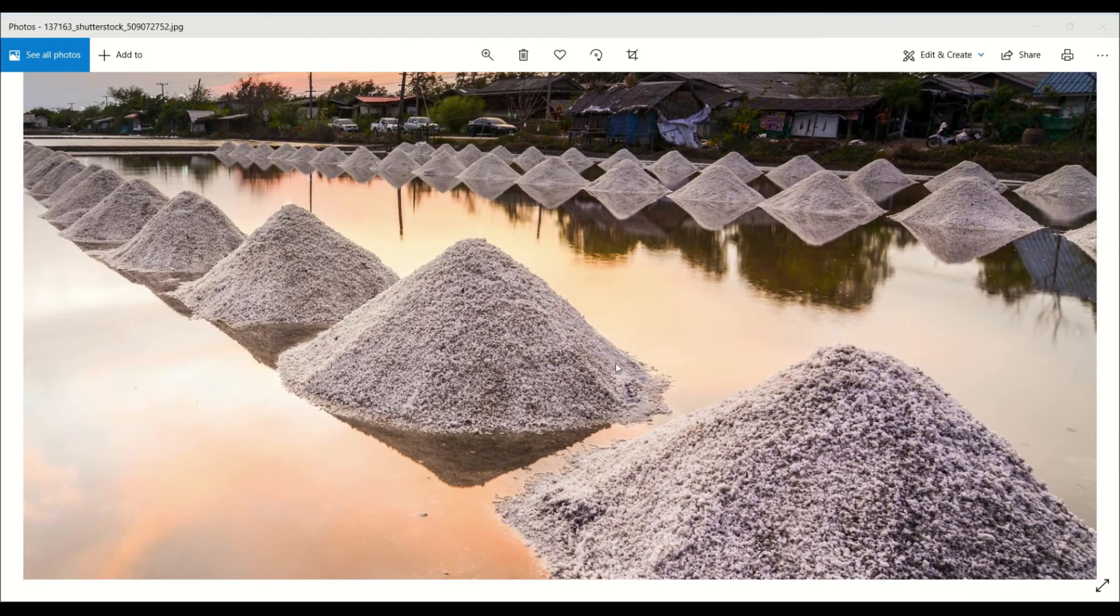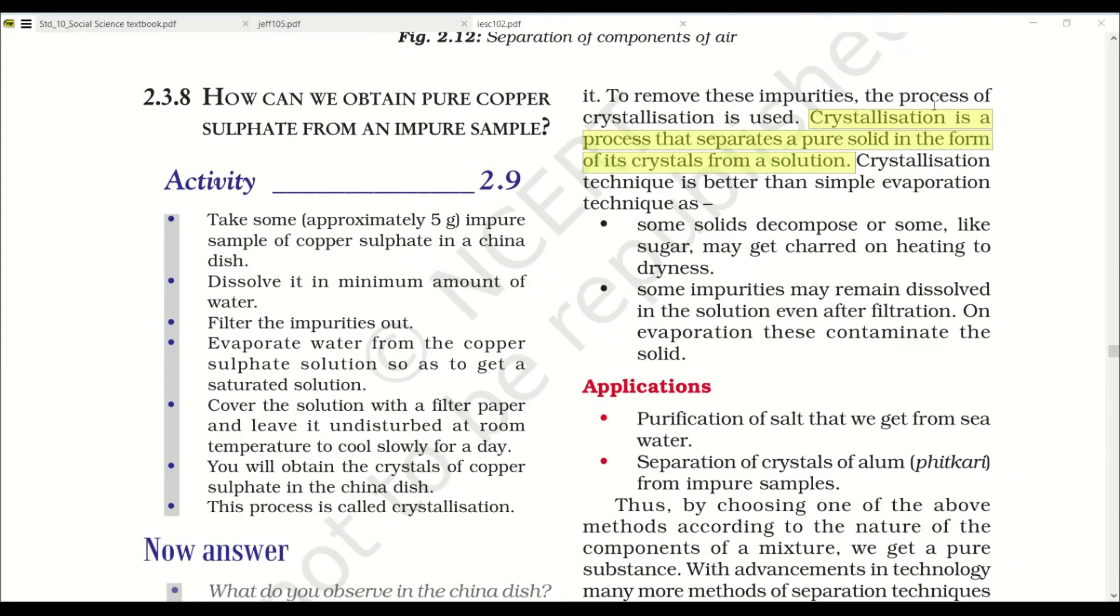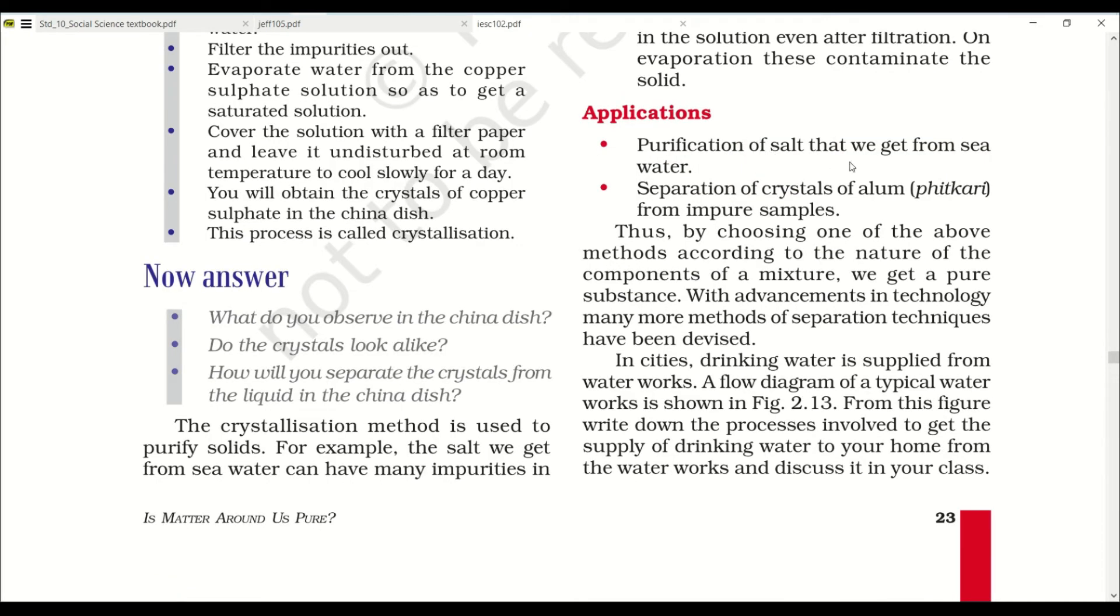The crystallization method is used to purify solids. For example, the salt we get from sea water. To remove these impurities, the process of crystallization is used. Crystallization is a process that supplies a pure solid in the form of its crystals from a solution. Crystallization technique is better than simple evaporation as some solids decompose or some like sugar may get charred on heating due to dryness. Applications: purification of salt that we get from sea water, separation of crystals of alum from impure samples. Thus by choosing one of the above methods according to the nature of the components of the mixture, we can get pure substances.